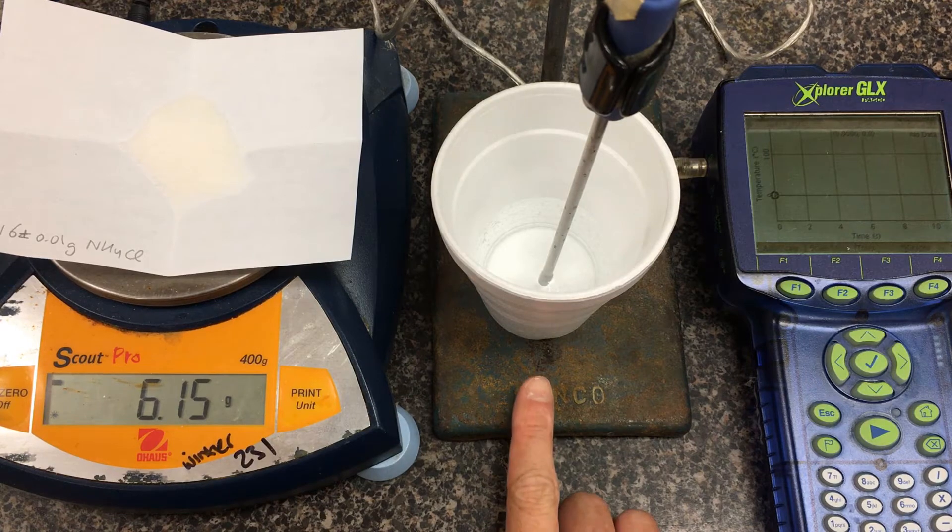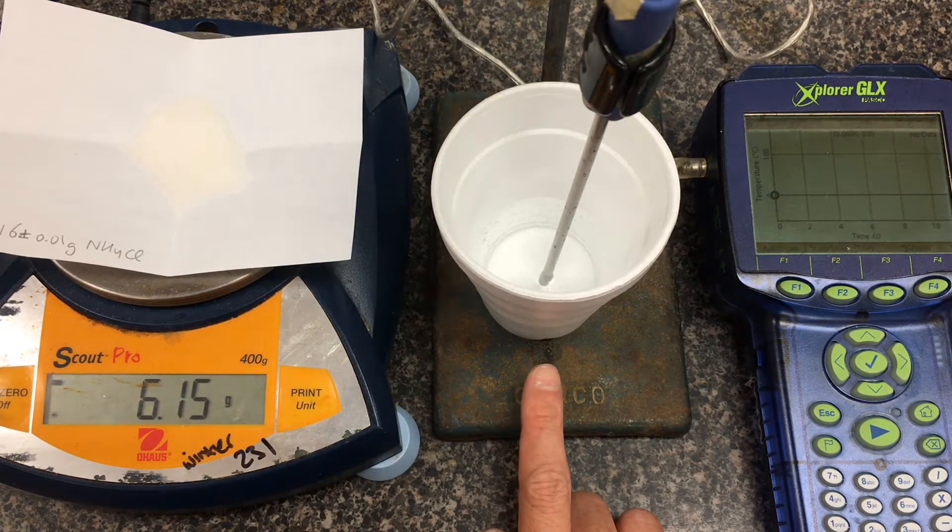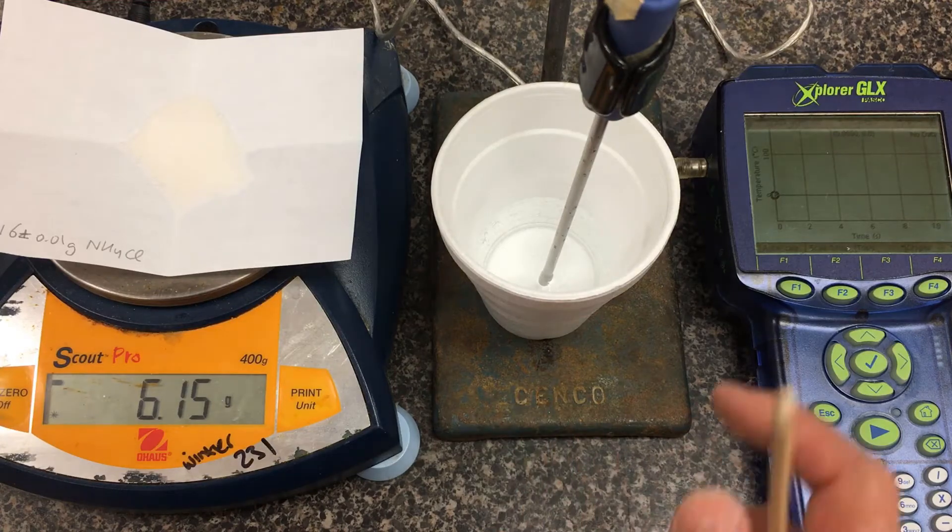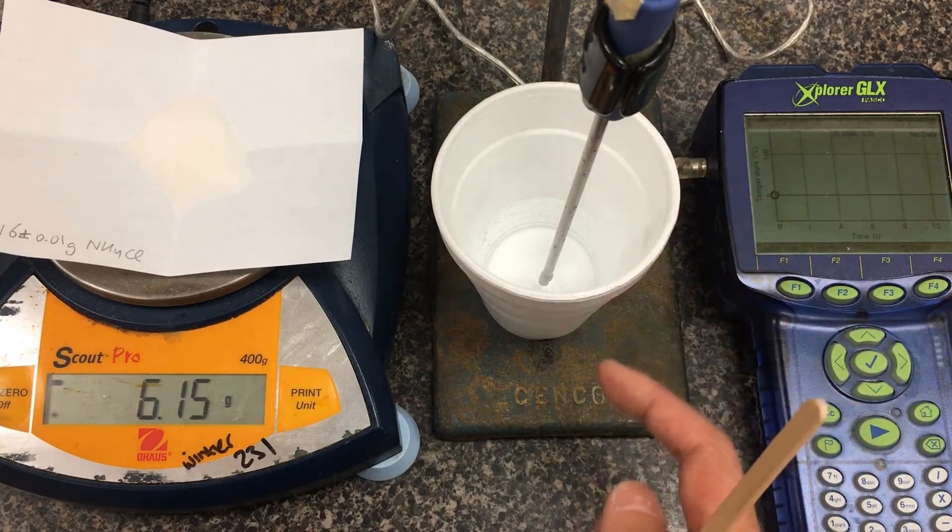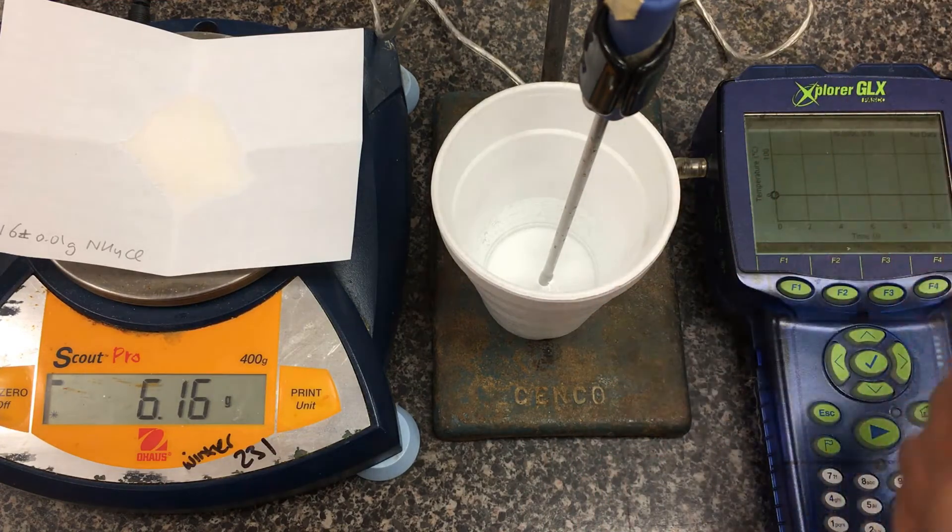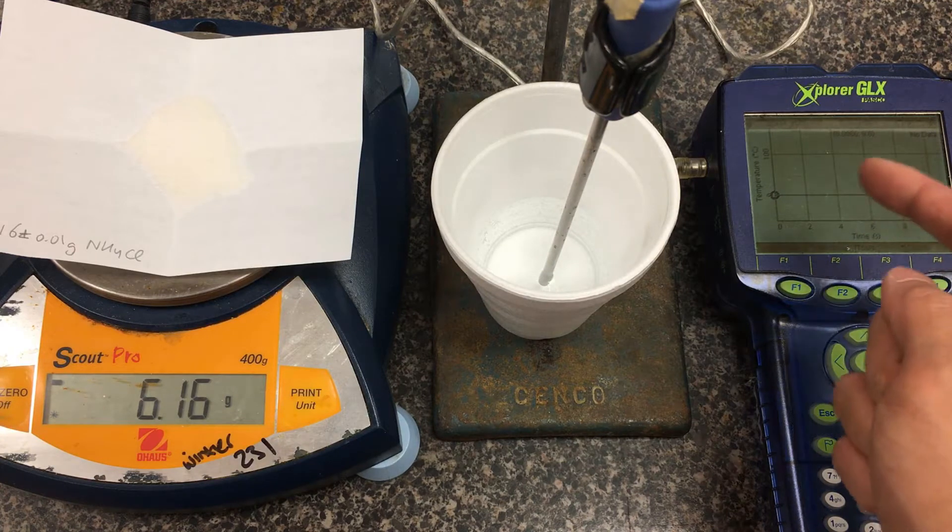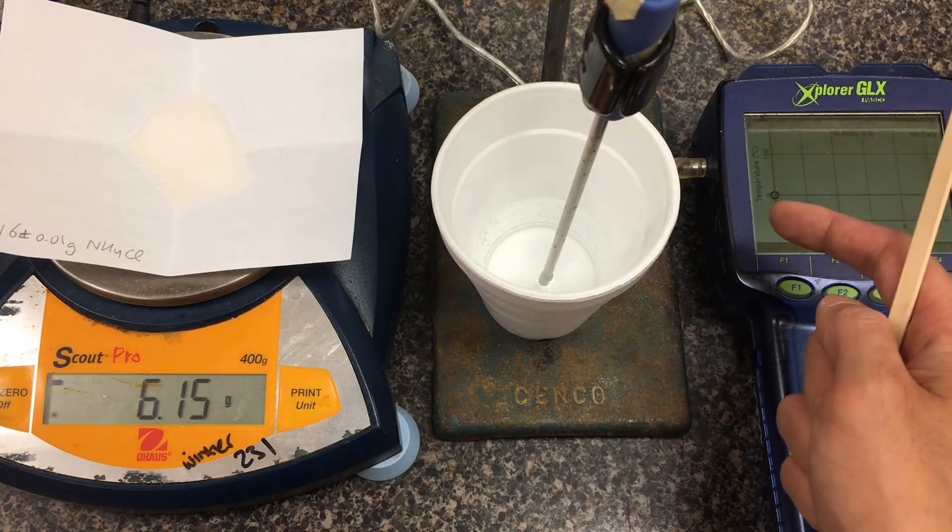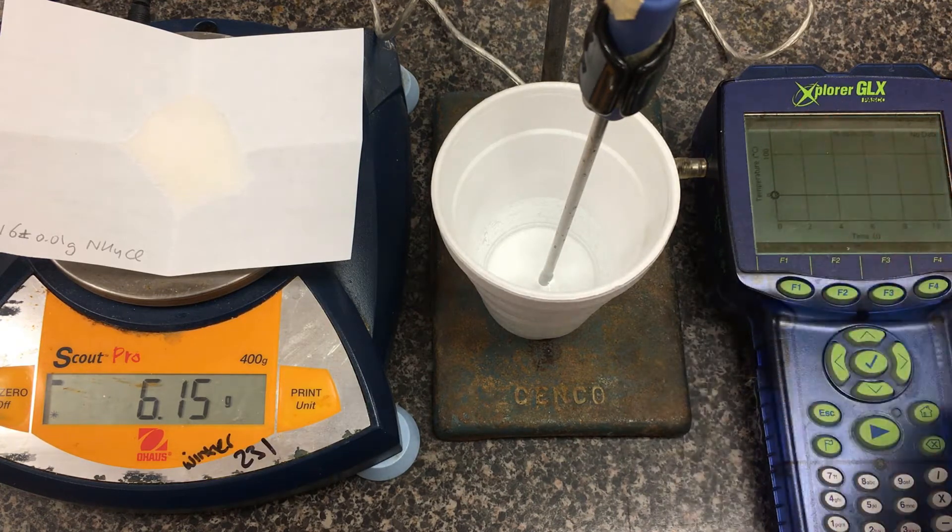We're going to be dissolving this powder into 50.0 milliliters plus or minus 0.5 milliliters of water. Standing here is a metal temperature probe hooked up to a GLX sensor. Our GLX device can sample the temperature in real time, plotting as a graph for us.